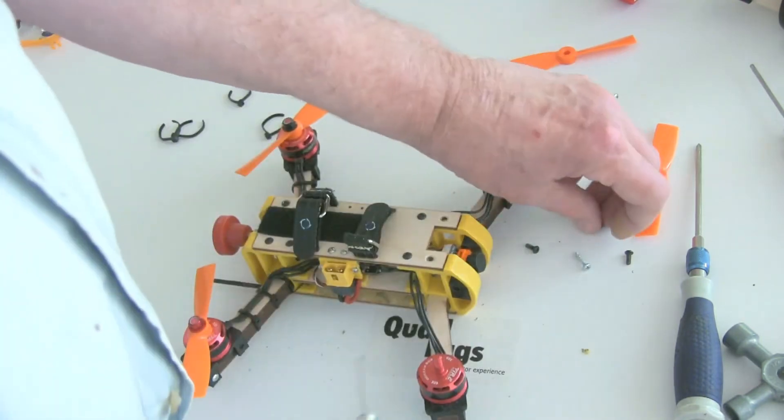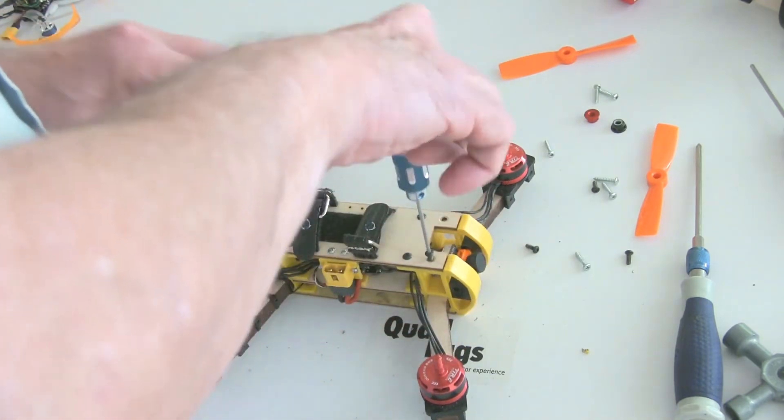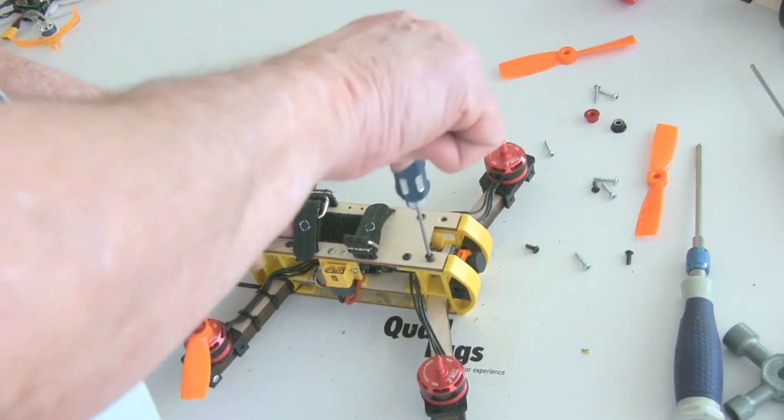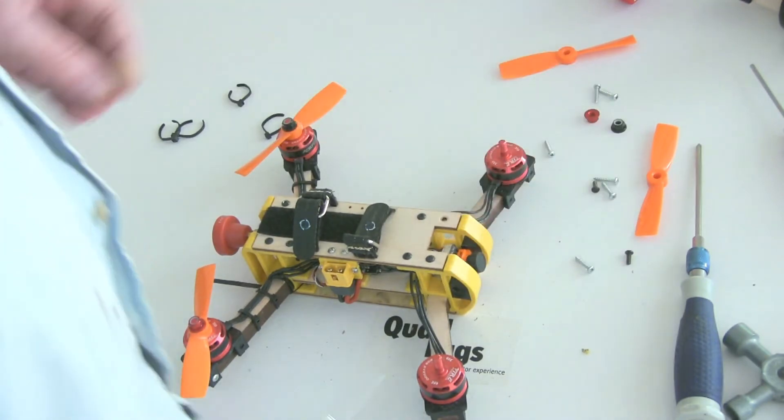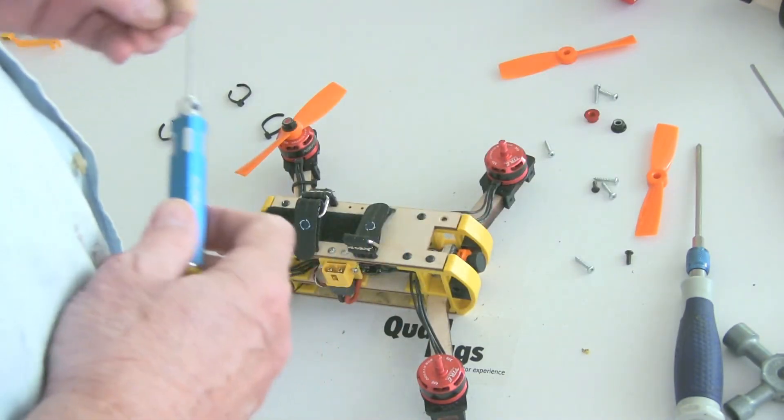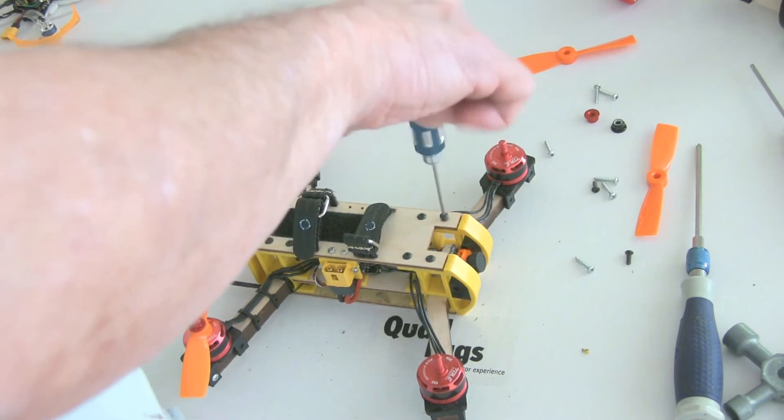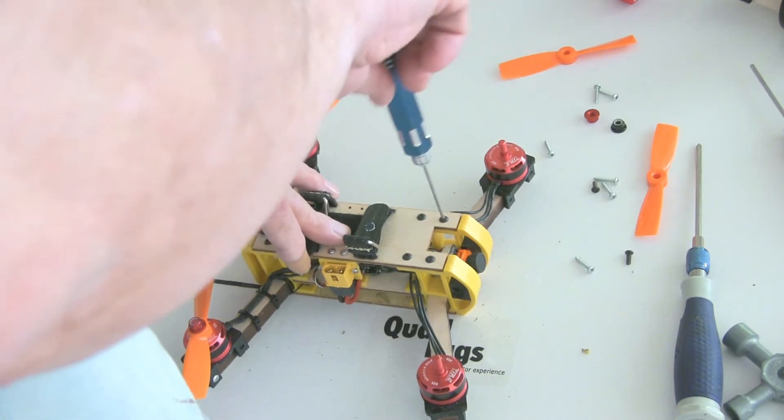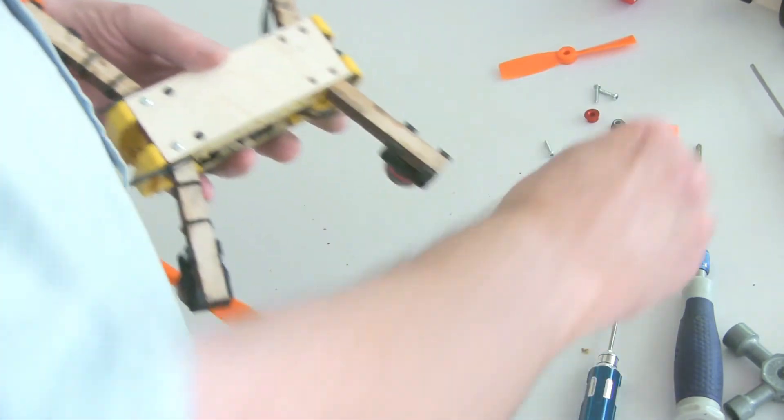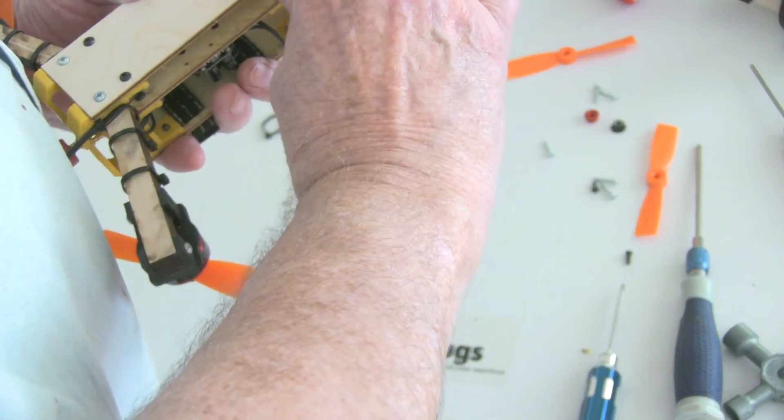And here we're going to be changing our swept back to, I guess you'd call it normal. The swept back flies well, it's not as stable. So the neat thing about QuadLugs is that you can try different things. So depending on how you cut the arms, you can test different things out. Like I said, it flew pretty good, but it was not quite as stable for sure.